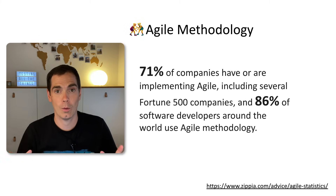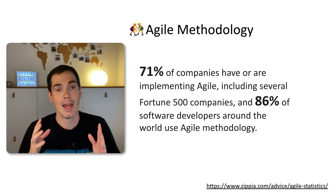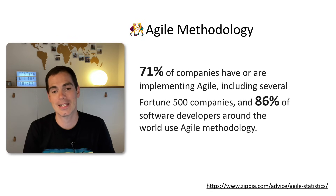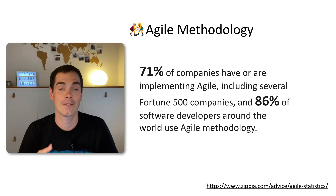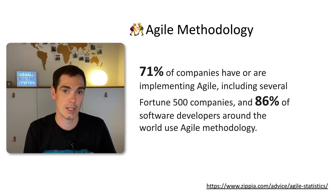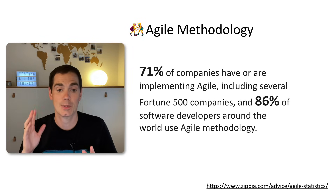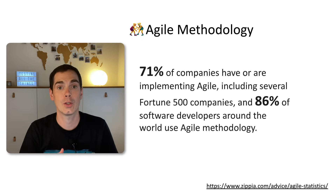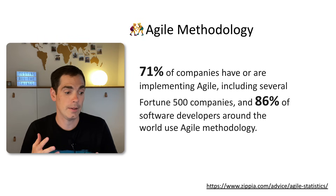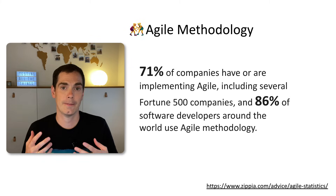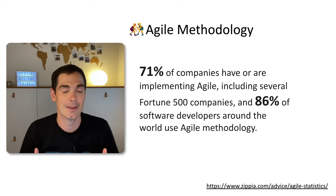Agile is almost everywhere. According to SIPIA, more than 71% of companies have or are going to implement Agile methodology — Scrum, Kanban, or the like — including several Fortune 500 companies. At the same time, SIPIA mentioned that more than 85-86% of software developers working around the world are using Agile methodologies. And this is similar for testing people and product managers, because Agile methodologies are the de facto standard when it comes to fast iterative software development and testing.